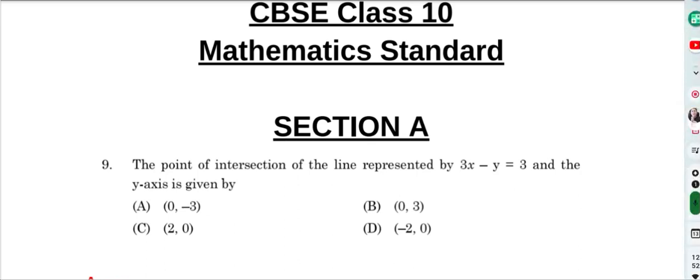Question number 9. The point of intersection of the line represented by 3x minus y equal to 3 and the y-axis is given by.